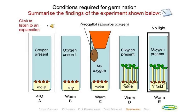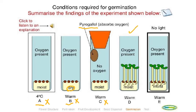To investigate the factors necessary for germination, take four test tubes and soak seeds beforehand, placing four to ten seeds per tube - not just one, because a genetically defective seed might not germinate regardless of conditions. Setup A is at four degrees Celsius - it will not germinate because the temperature is too low. Setup B has dry cotton wool with no water - will not germinate. Setup C contains pyrogallol, which absorbs oxygen, so there is no oxygen - will not germinate. Setup D has all three conditions present - it will germinate.